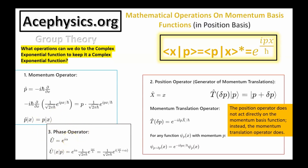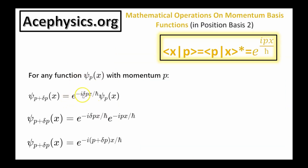The phase operator multiplies the eigenstate by a phase factor, which does not change the physical properties of the state. The position operator is another operator in quantum mechanics, but the position operator does not act directly on the momentum basis functions. Instead, the momentum translation operator does. The momentum translation operator T-delta-p translates the momentum by some small amount delta p, and is the exponential of the position operator: e to the minus i delta-p x over h-bar. If I act the momentum translation operator onto a state psi of p, it changes it to a state with a new momentum, psi of p plus delta p.